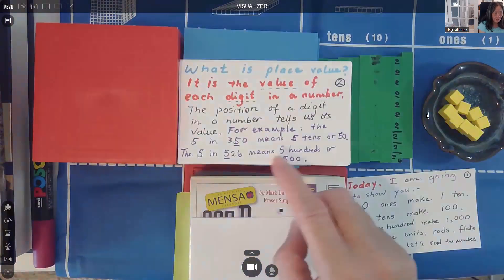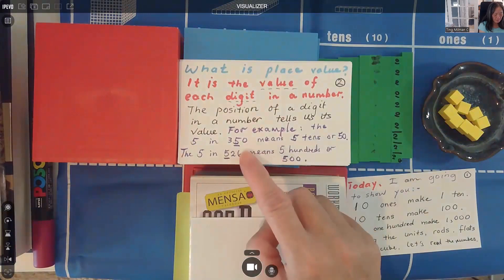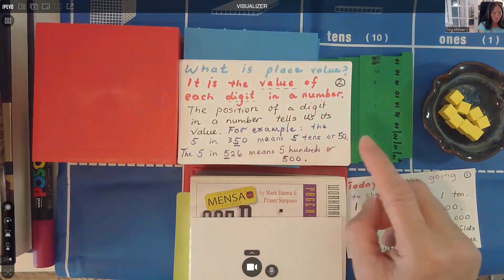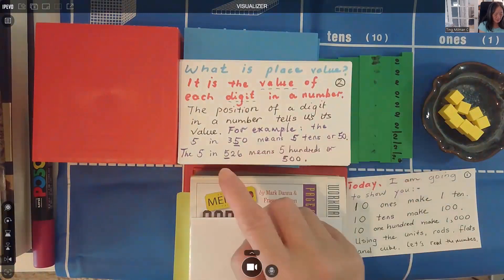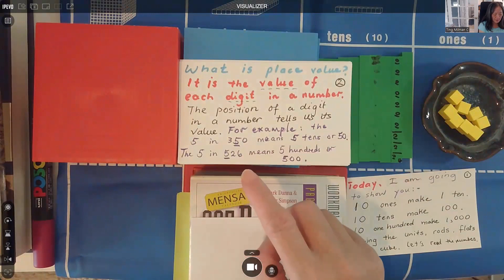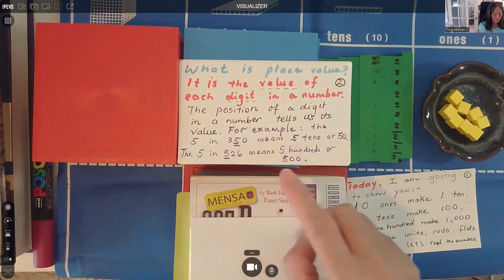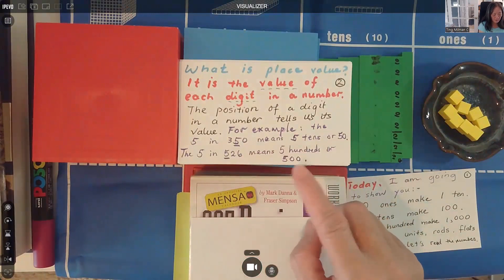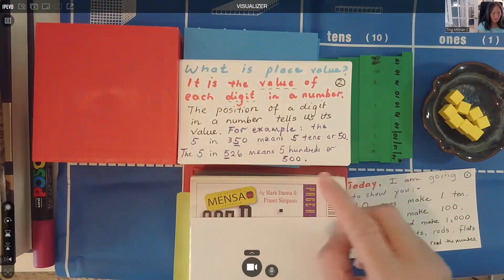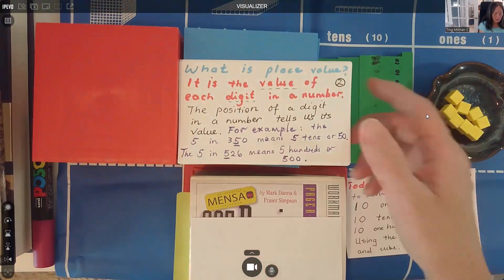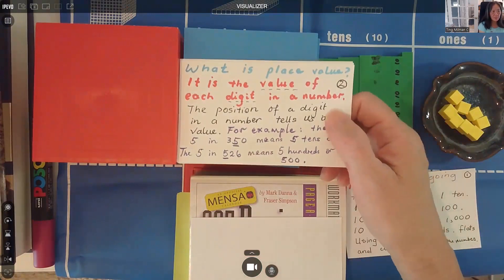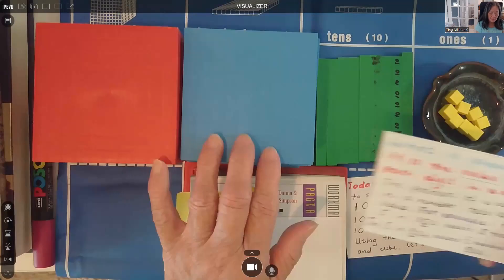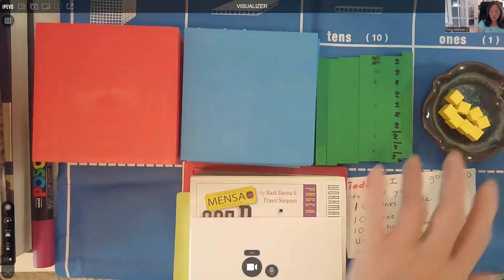For example, the 5 in 350 means 5 tens, or 50. The 5 in 526 means 500. So I'm going to illustrate this visually by using the cube, the flats, the rods, and the units.